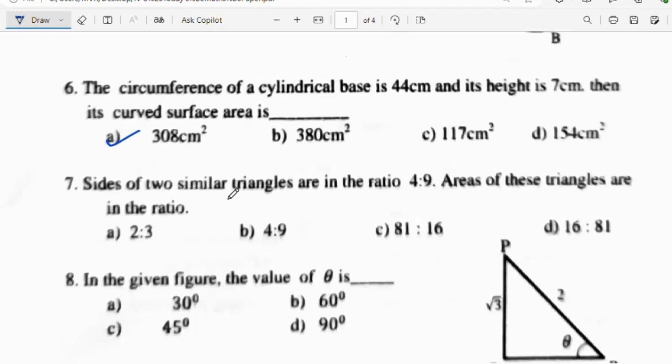Seventh question: Sides of two similar triangles are in the ratio 4 is to 9. Areas of these triangles are in the ratio. Two similar triangles with ratio 4 is to 9, we have to find the area. Using the formula, we will get the answer 16 by 81. 4 square is 16, 9 square is 81. The answer is 16 is to 81.